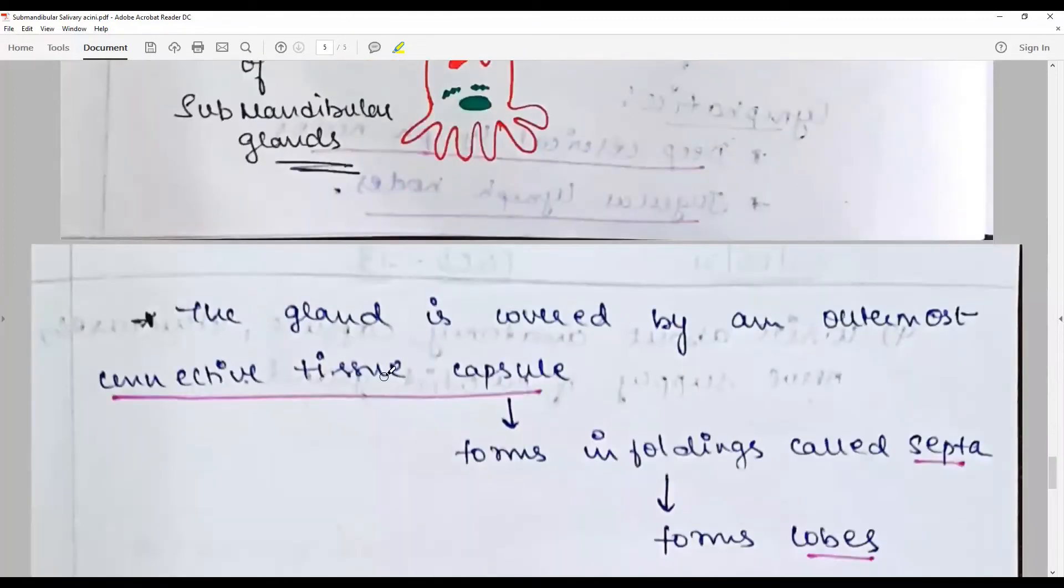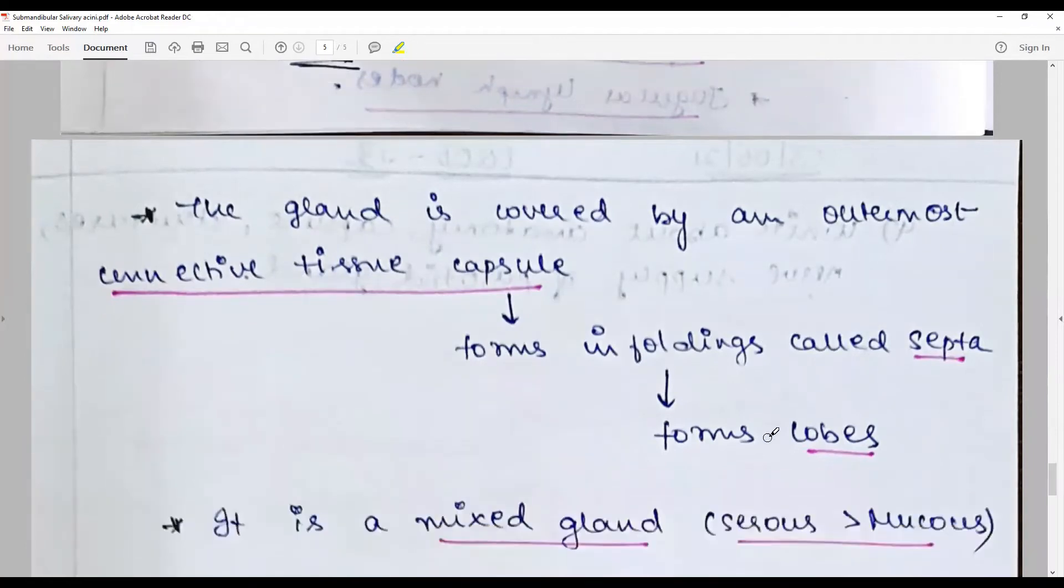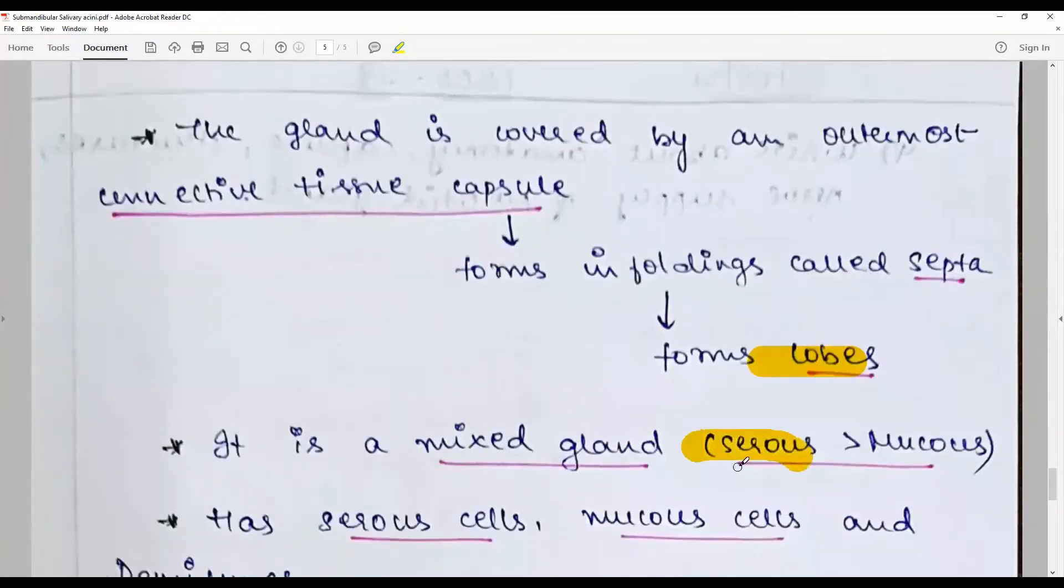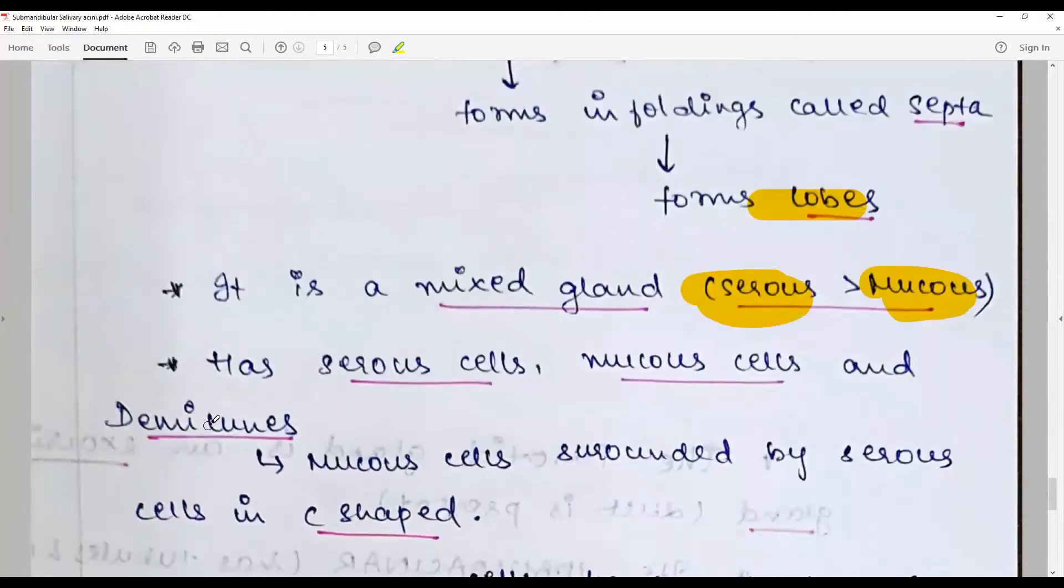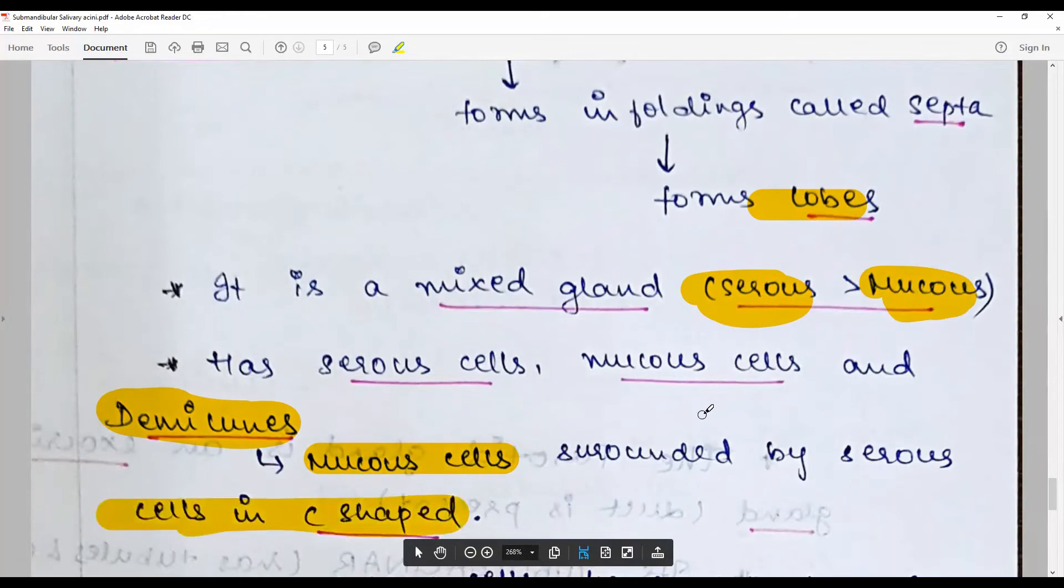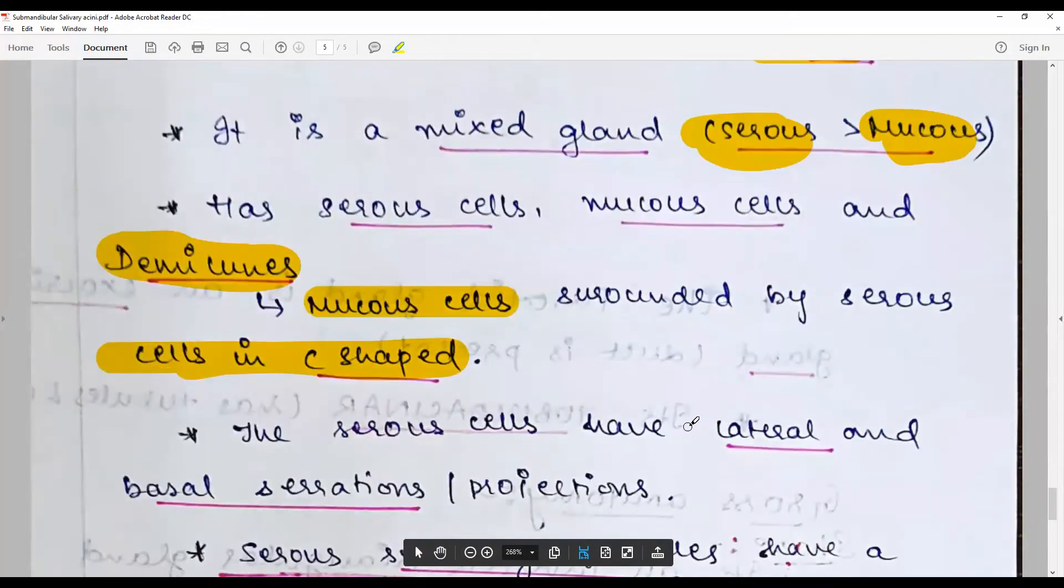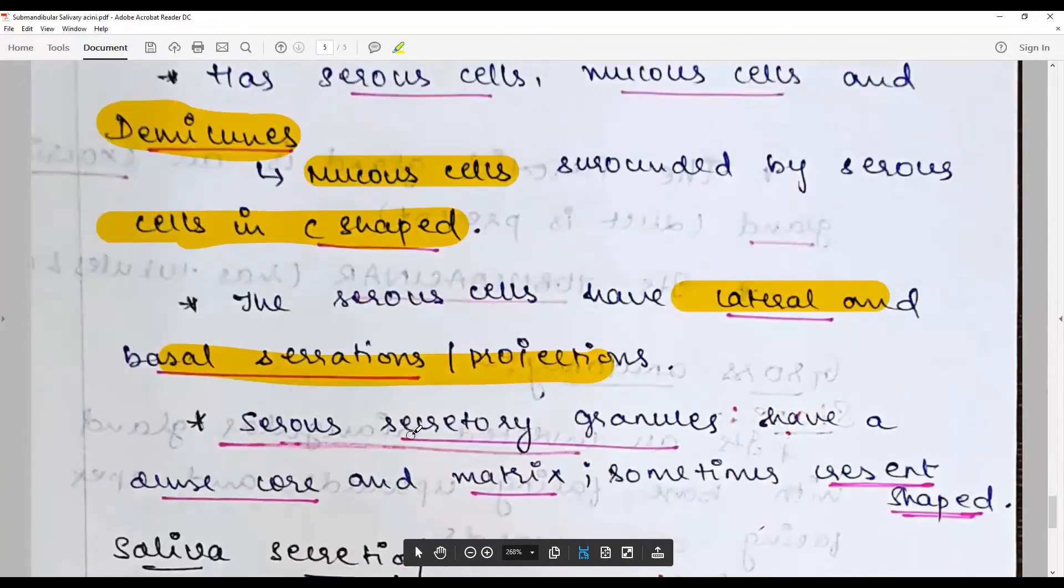The gland is covered by an outermost connective tissue capsule which forms infoldings called septa forming the lobes. It is a mixed gland with more serous glands, less mucus. In the mucus acini there are specific structures called demilunes, which are mucus cells surrounded by serous cells - C-shaped serous cells capping the mucus glands. They have lateral and basal secretions projections. The serous secretory granules have dense core and matrix, sometimes are crescent shaped as in demilunes.